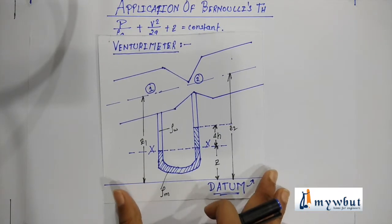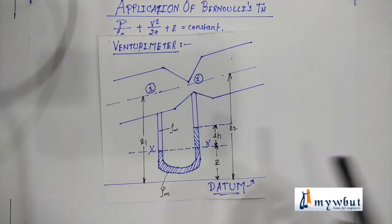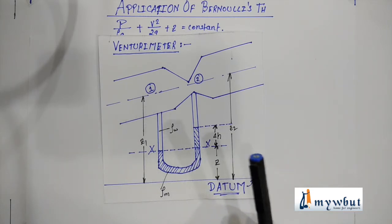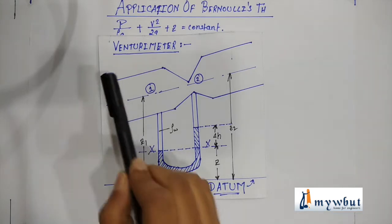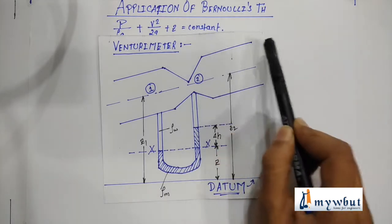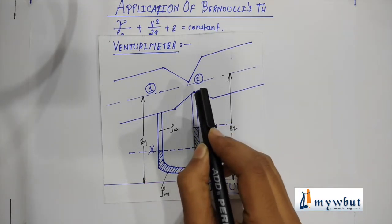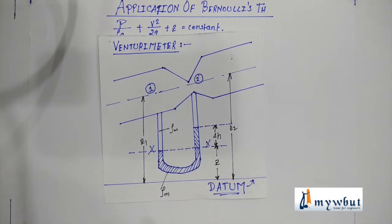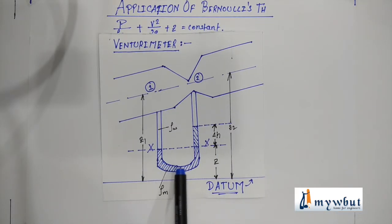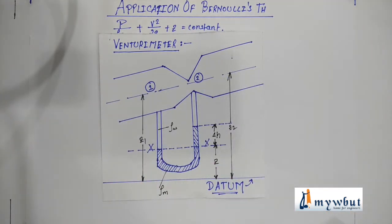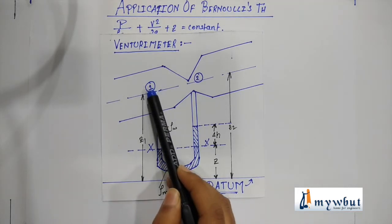This is how the venturimeter looks — this is the schematic diagram of the venturimeter. Let us now first understand the working. This is the datum line, that is the reference line that we have taken. This is the venturimeter apparatus, and this is a U-tube manometer that we have discussed in our earlier videos. This fluid is known as the manometric fluid, and let us assume that water is flowing through the venturimeter.